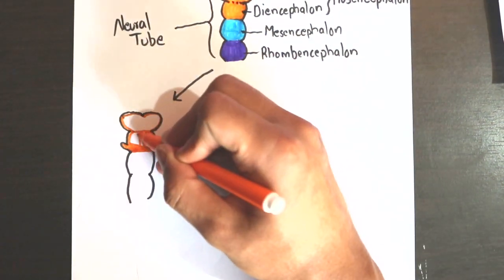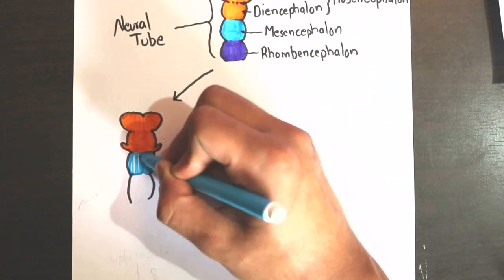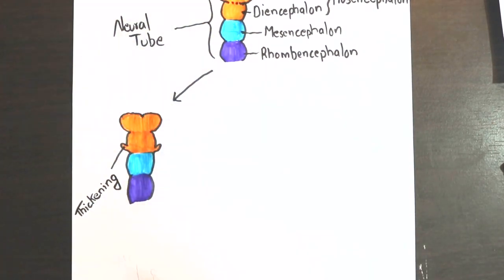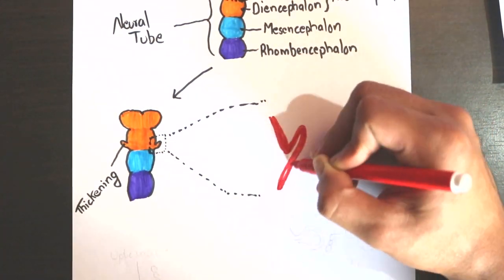The area of neural plate which forms the diencephalon develops a linear thickened area on either side. The thickened area soon becomes depressed to form the optic sulcus.